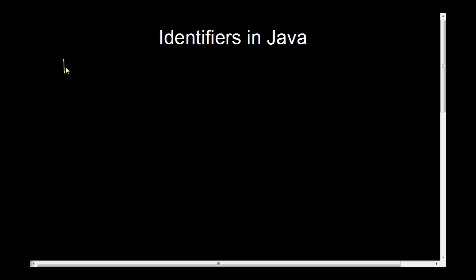So identifiers should always start with letters, digits, the underscore symbol, and the dollar sign.